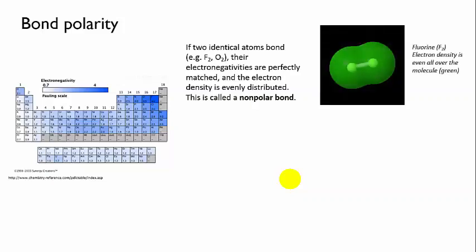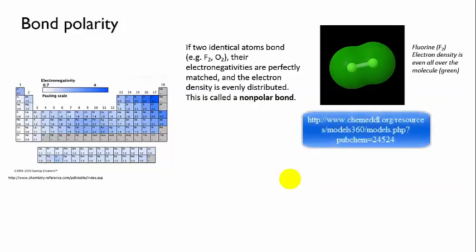This picture from the models 360 database illustrates this by showing a whole fluorine molecule colored green, which indicates that there is even electron density around the molecule.